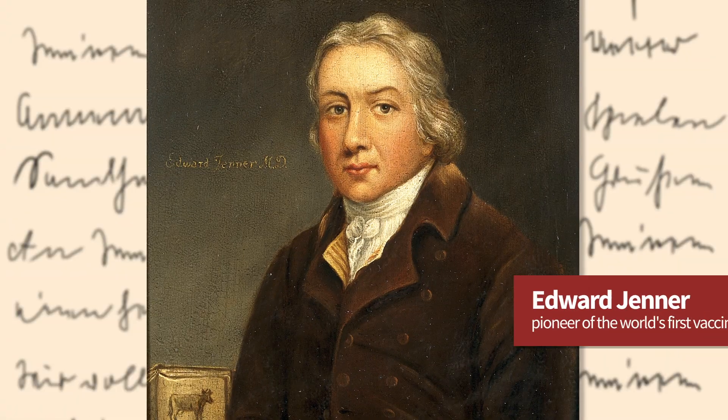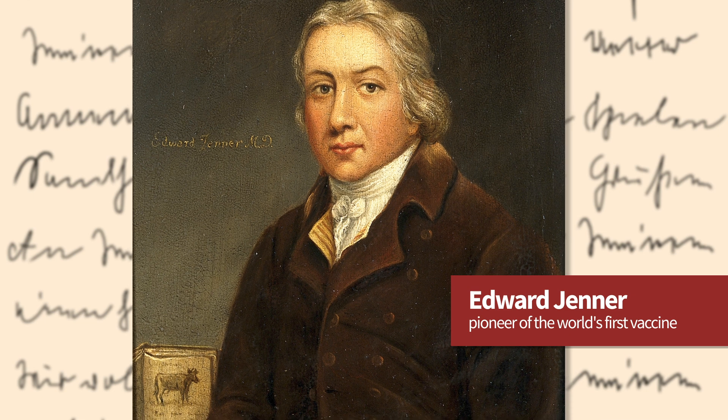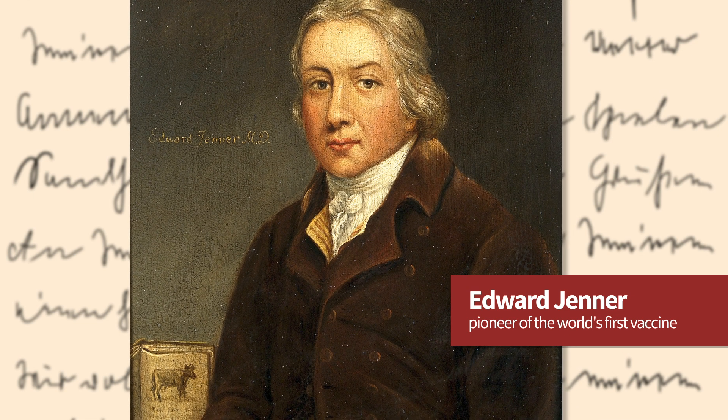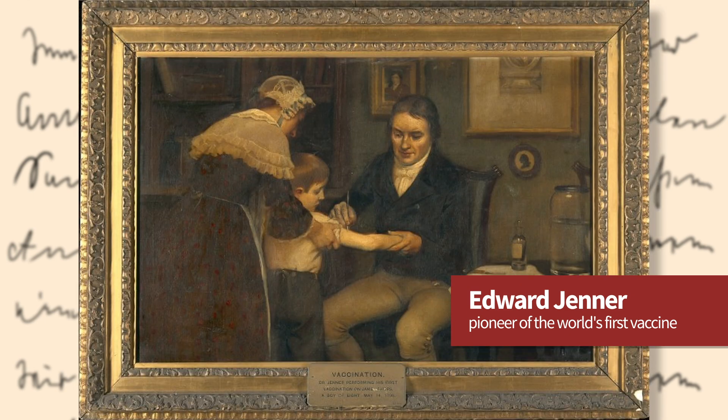To stay with Jenner for a second, we could think about his use of experimental subjects. He used his gardener's son to trial his smallpox vaccine, which ultimately ended up with him actually injecting smallpox to see if his vaccine worked. There are clear ethical components, and the vaccine was then later tested on prisoners.